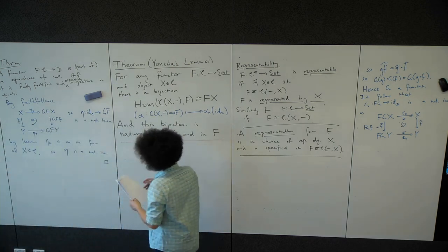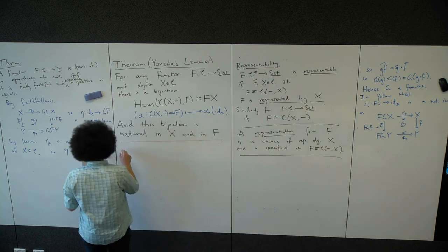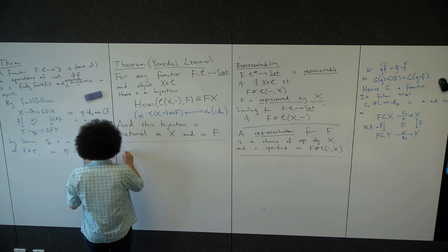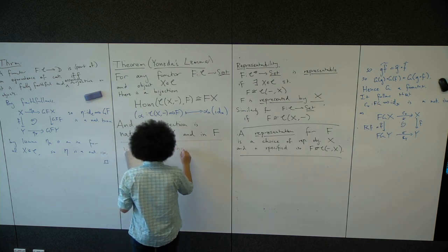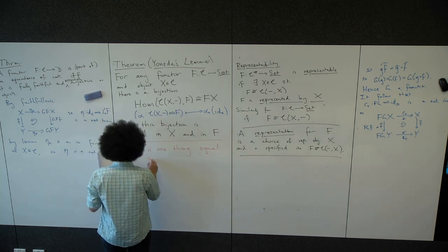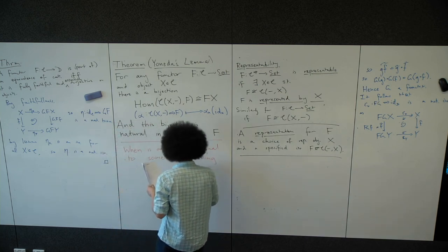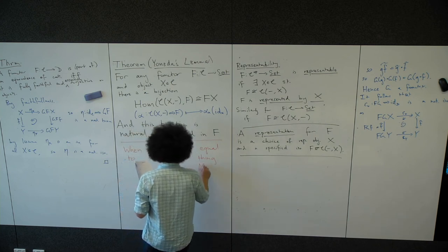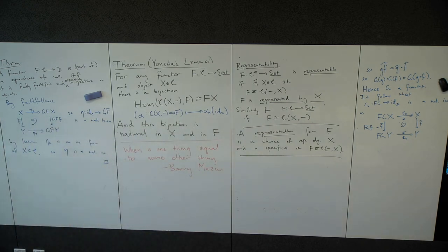I'm going to email this out. For next week — I won't talk again until Monday, so you've got six days — I want people to read the essay 'When is one thing equal to some other thing?' by Barry Mazur. It's about 25 pages, about representability. It's pretty easy reading, not intense mathematics, mostly philosophical.